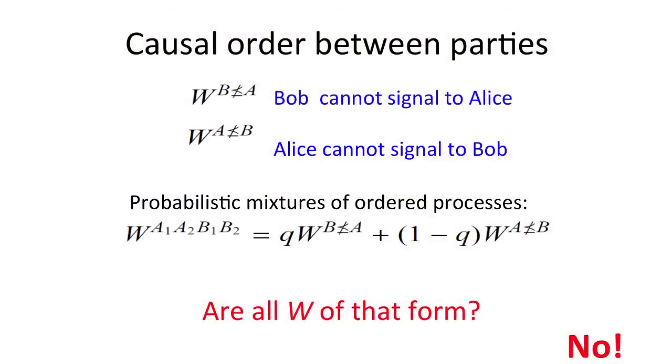Is there anything new what we get from this formalism? It would be very sad if this is all what we can say. One thing that we can ask: if I collect all these process matrices that have the causal relations such that, for example, the first represent all process matrices where Bob cannot signal to Alice, so Alice signals to Bob or they are causally neutral, and all those where Alice cannot signal to Bob, and I think about all classical convex probabilistic mixtures of ordered processes, I might ask: is this all what I can have? Are all W matrices of that form? And the answer is no. Here is the example of that.